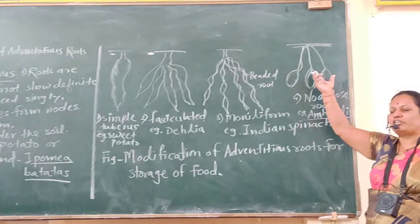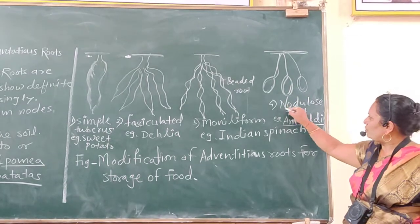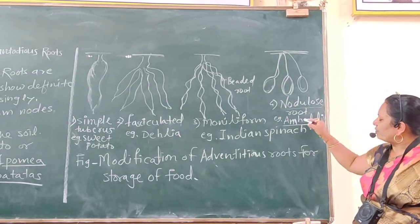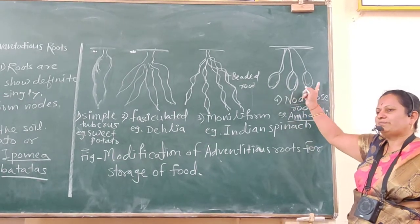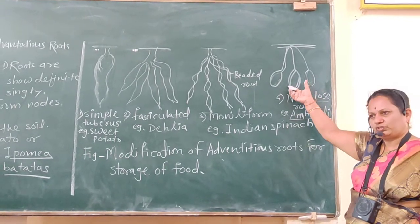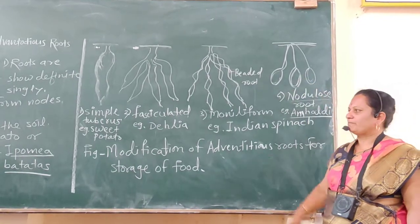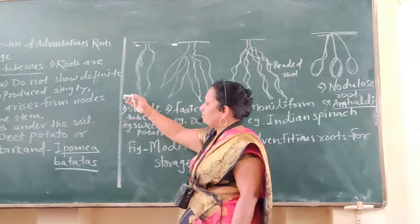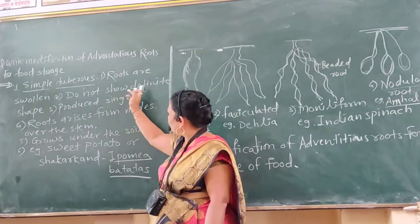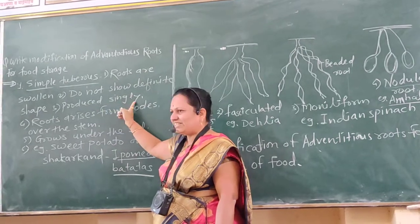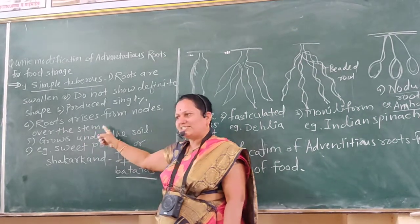Fourth type of modification of adventitious root for storage of food is nodulated root. Nodulated root example is Ampelamus or similar unbranched plants. Nodule-like structures present are shown by the roots, where actually storage of food takes place. Here simple tuberous roots are shown. They do not show definite shape, produced singly. Roots arise from nodes over the stem.